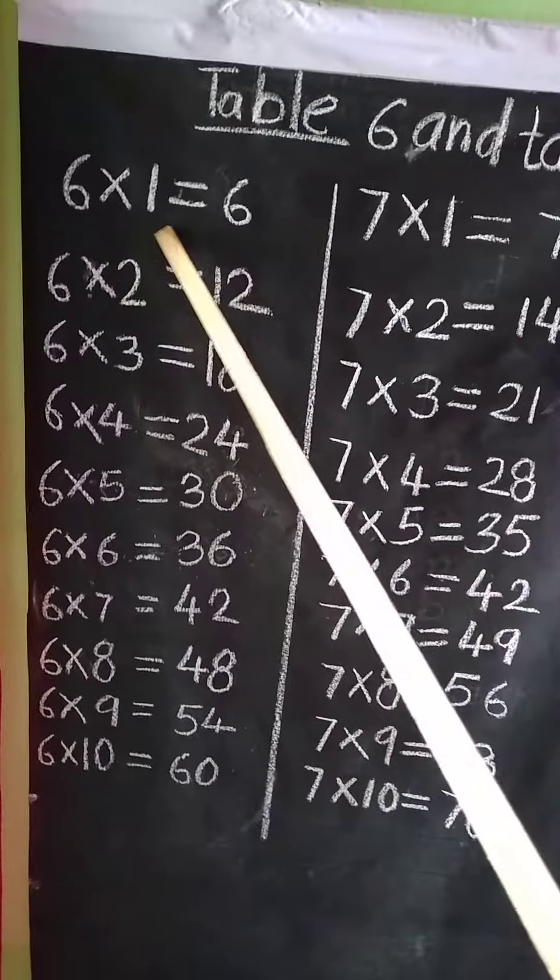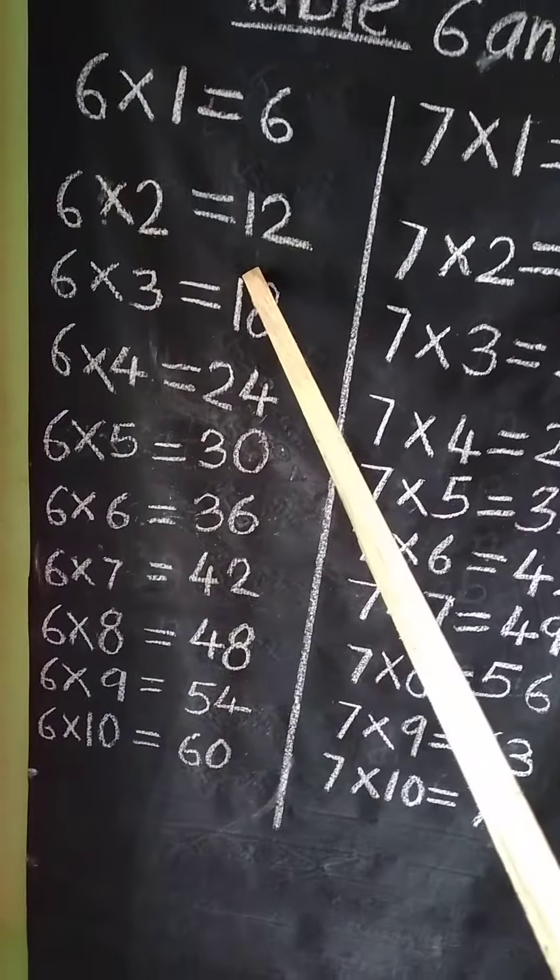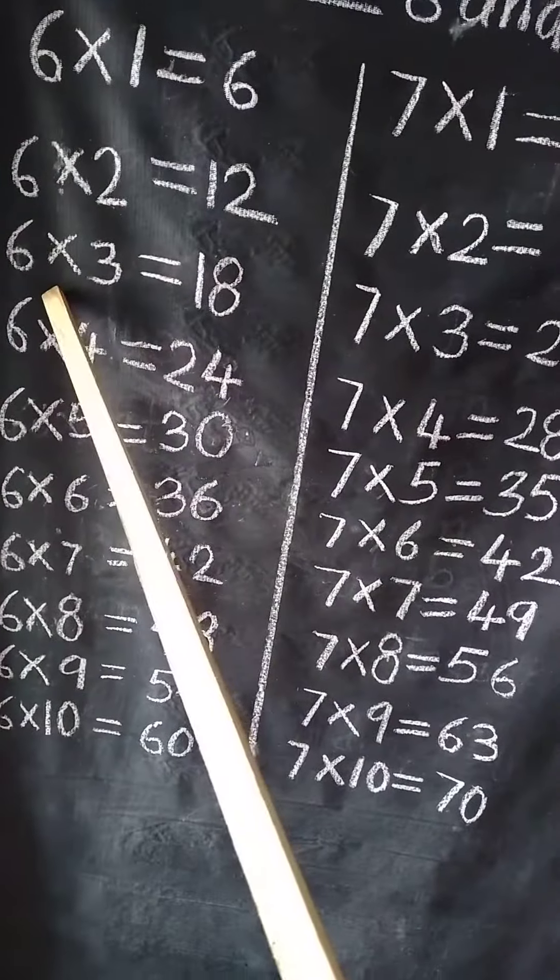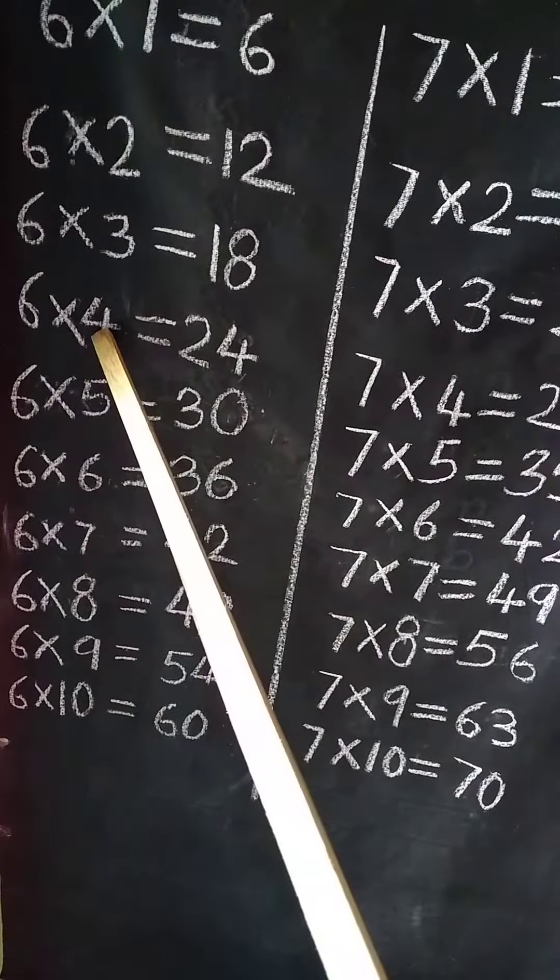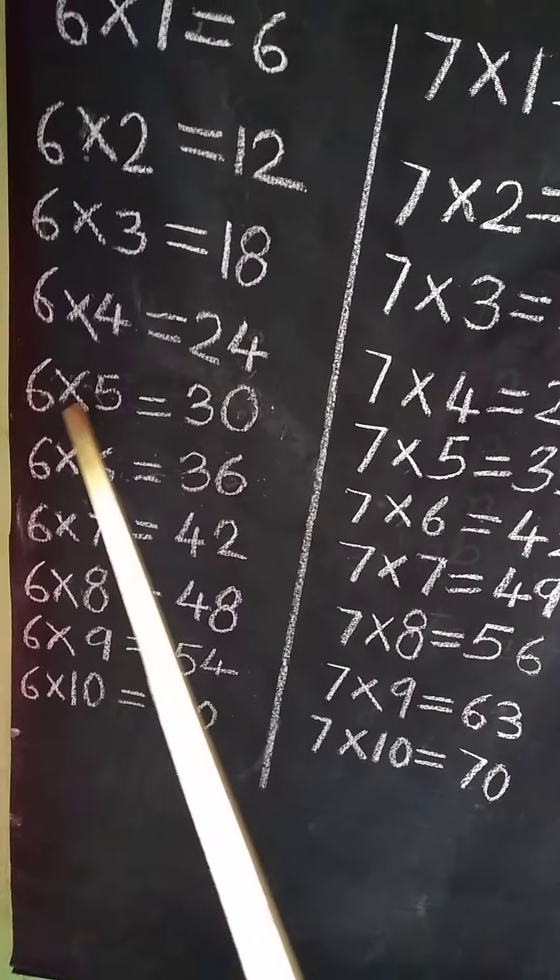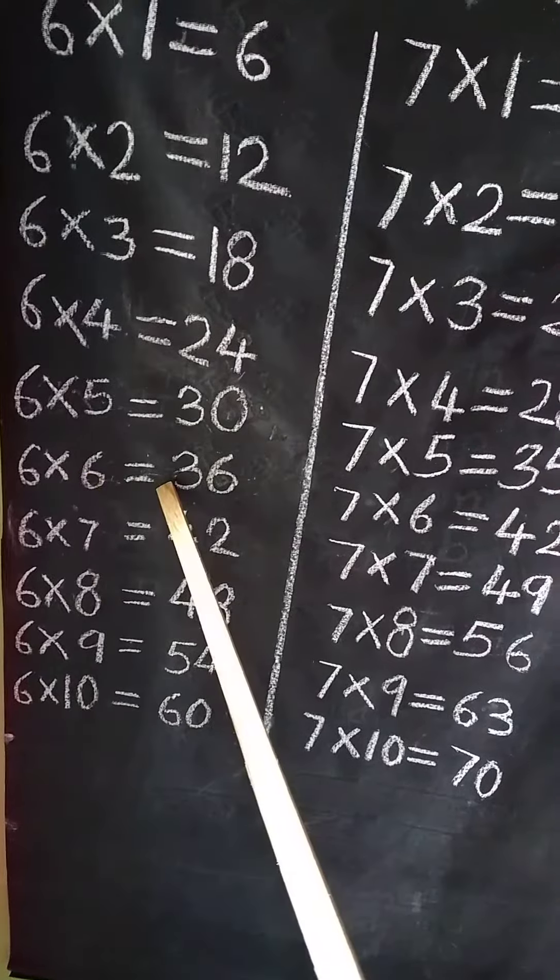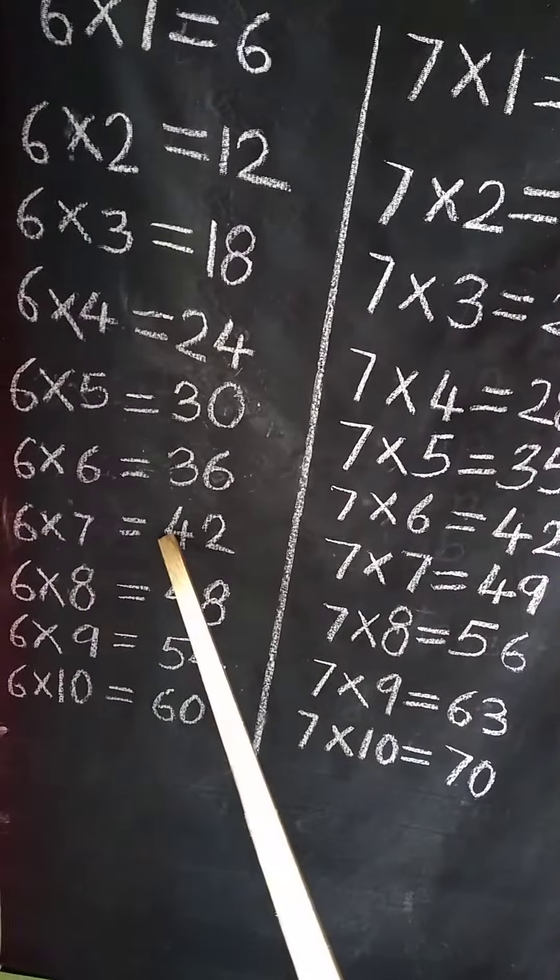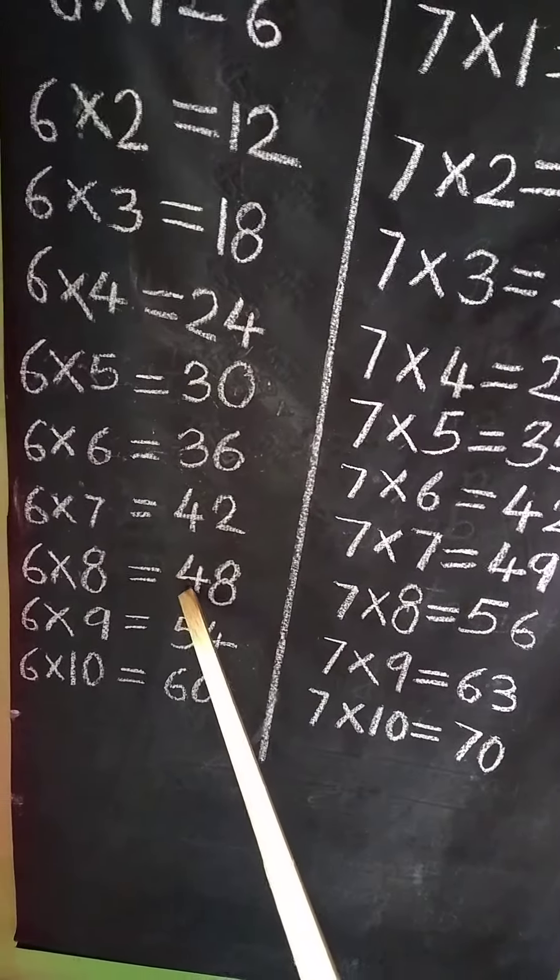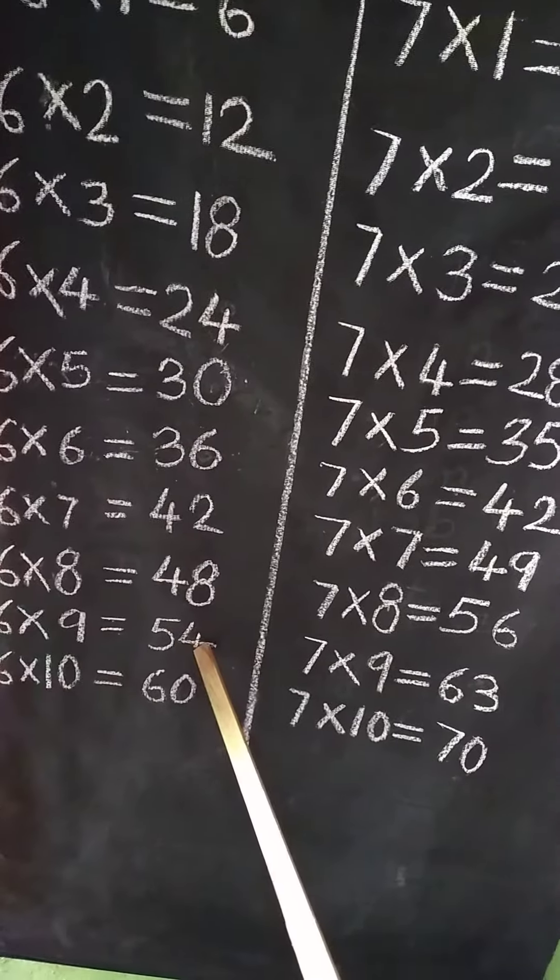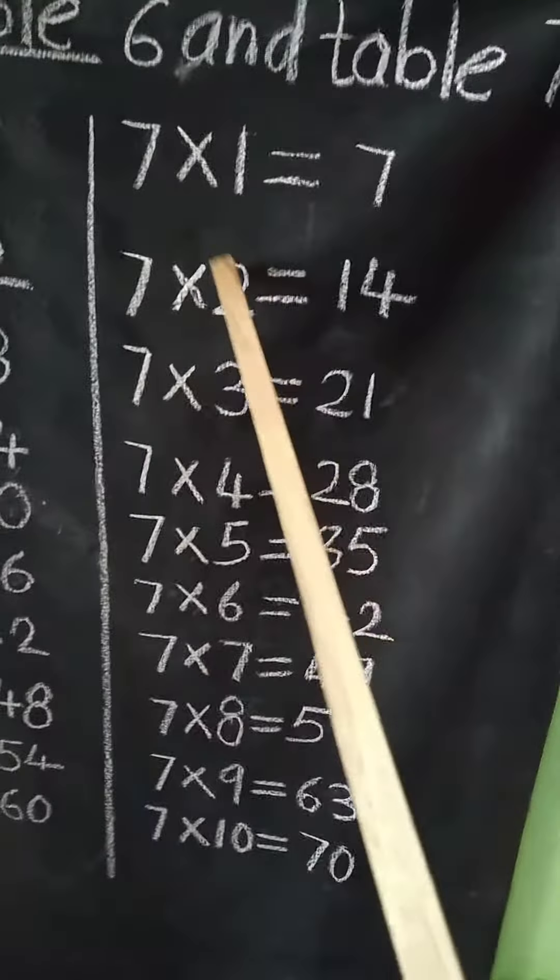6, 1 is 6. 6, 2 is 12. 6, 3 is 18. 6, 4 is 24. 6, 5 is 30. 6, 6 is 36. 6, 7 is 42. 6, 8 is 48. 6, 9 is 54. 6, 10 is 60.